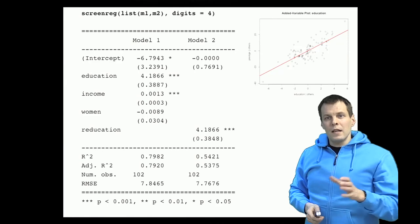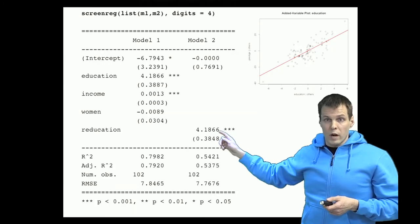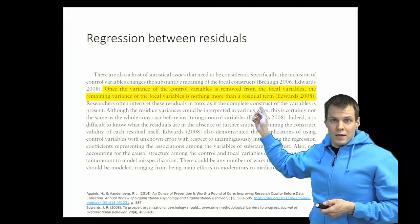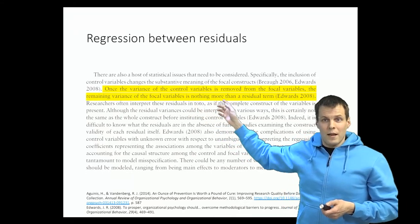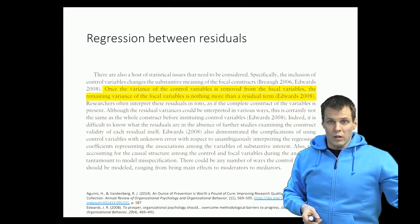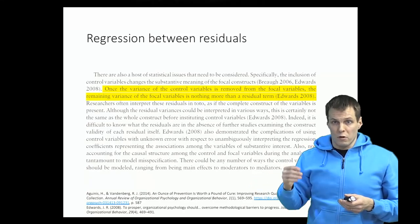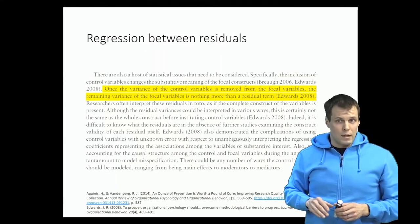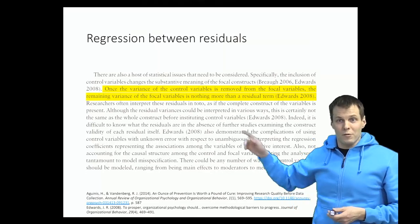Also, the idea that the regression coefficient from the added variable plot is the same as regressing one residual on another helps you understand what Aguinis and Wanderberg argue in their paper: if we have many controls in a model, we are basically analyzing residuals from a model where both the dependent variable and the independent variable are first regressed on those controls. Whether analyzing the relationship between two such residuals is problematic is beyond the scope of this video, but it is technically correct to say that this is just a residual analysis.